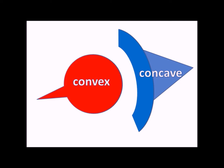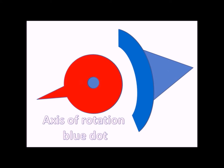In a convex bone, such as the femoral head, the rotation occurs around a central axis, which is within the actual head of the bone itself.